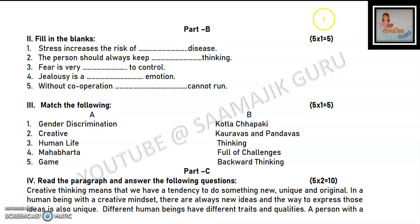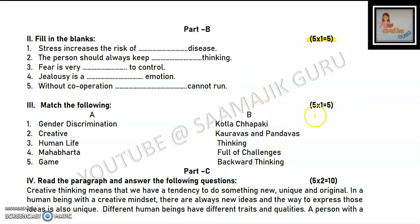Next, Part B will be given with 2 questions: fill in the blanks and matching. Fill in the blanks is 5 marks and matching is 5 marks. Part C will give you a paragraph from your book, and questions will be asked based on it — this totals 10 marks.